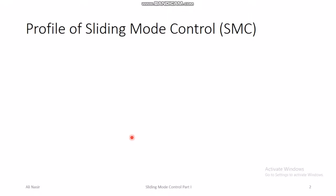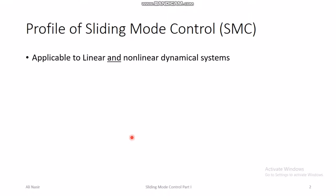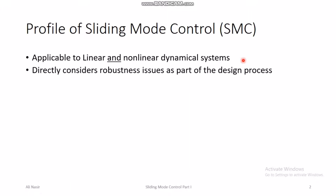Before we discuss the details of sliding mode control, I want to go through the profile of this control technique. It is applicable to both linear and non-linear dynamical systems. Sliding mode control considers robustness issues as part of the design process. Although feedback control is robust by structure, sliding mode control also includes uncertainty as part of the design process, giving additional robustness properties compared to any usual feedback control technique.